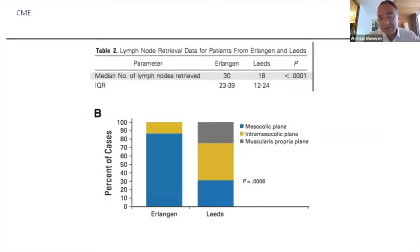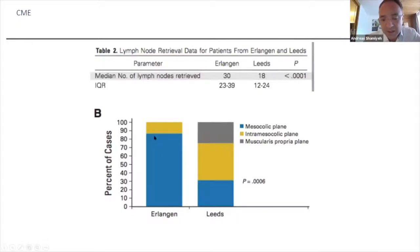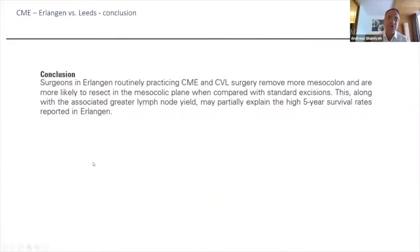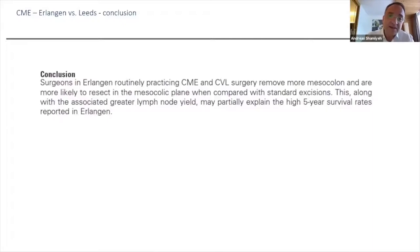One critical point is that in the Leeds group, 10 surgeons performed 50 procedures, which might have had an impact. But the quality of the mesocolic plane was almost 85% best quality, and only a few percent missed the plane. On the measurement table, in all distances and lengths, the Erlangen CME group had significantly better quality specimens and more lymph nodes. They concluded that CME with central vein ligation and lymphadenectomy, when the surgeon respects the mesocolic plane, gives greater lymph node yield and better five-year survival.